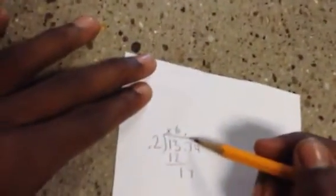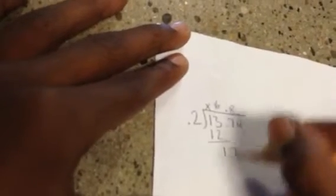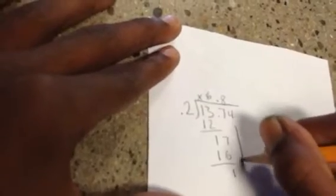2 times 8 getting closer to 17, since that's 16. So your 8, 16 goes down here. Minus 1. Bring down your 14.